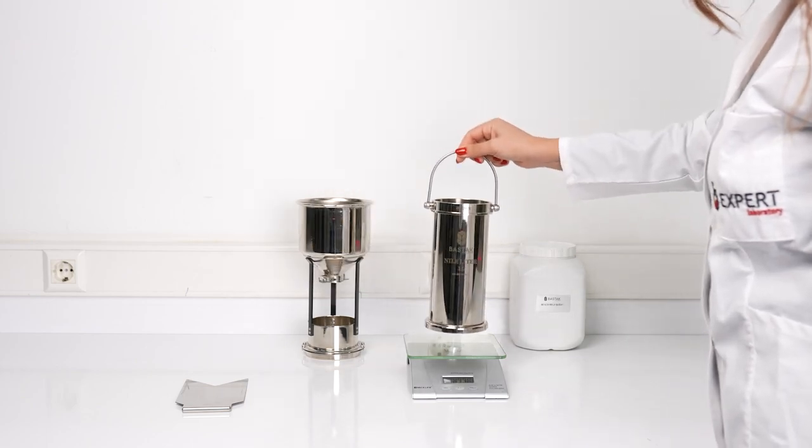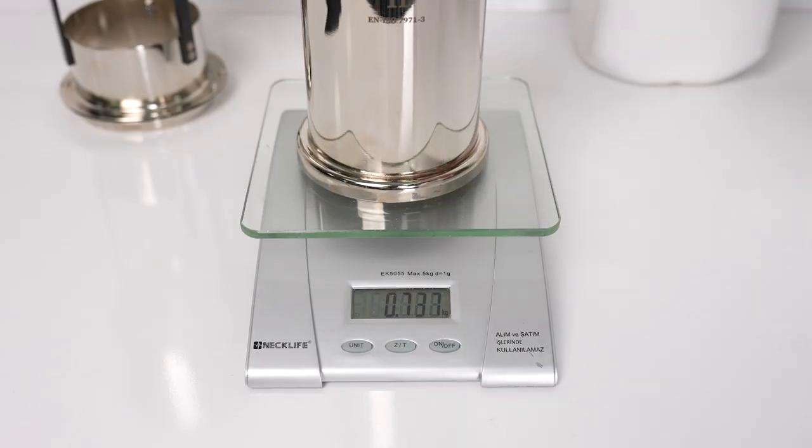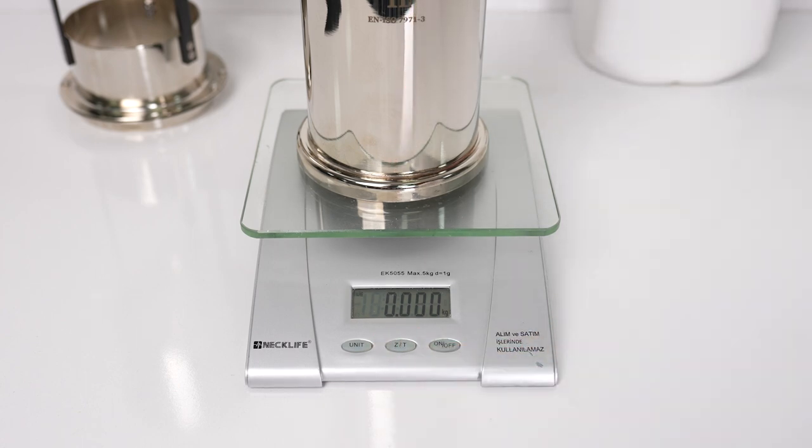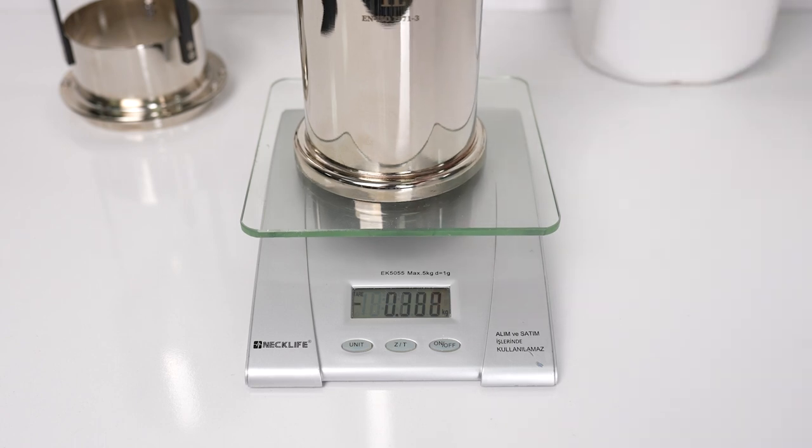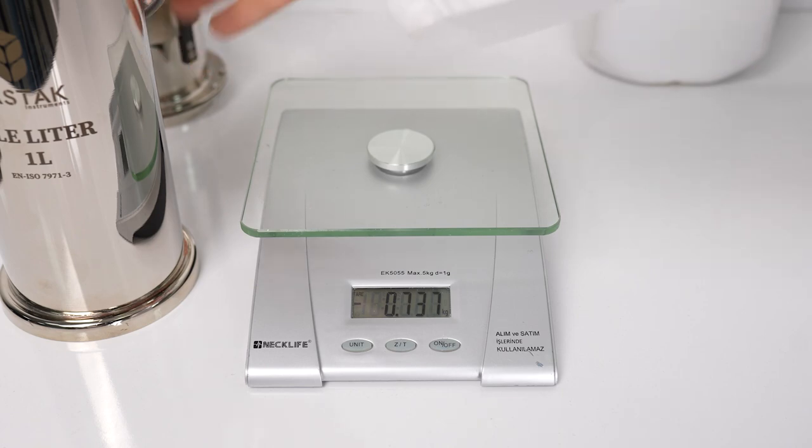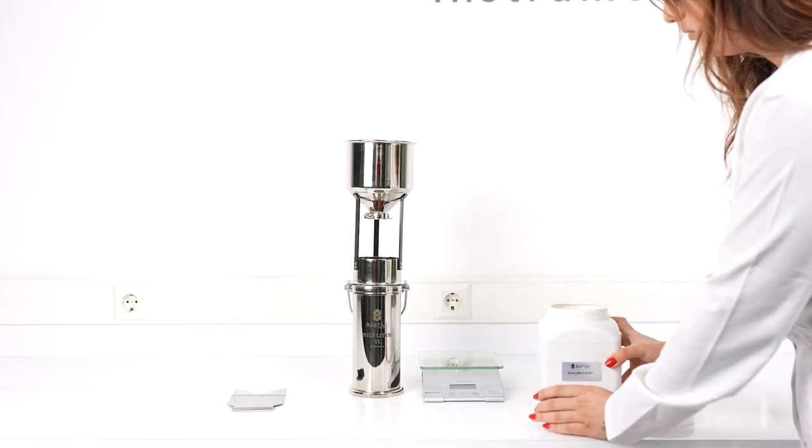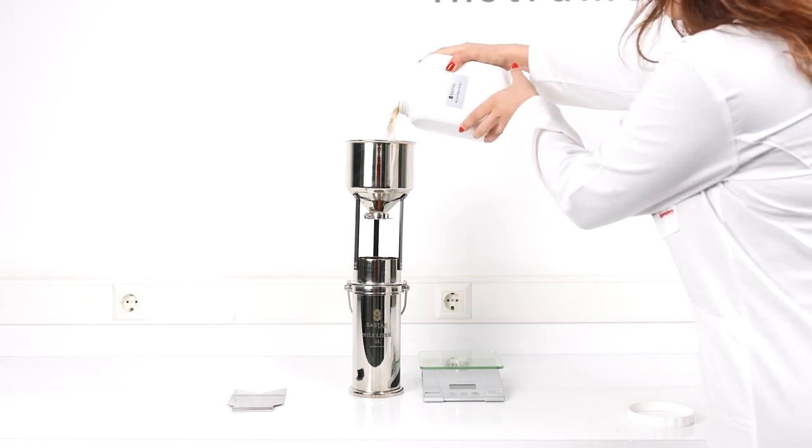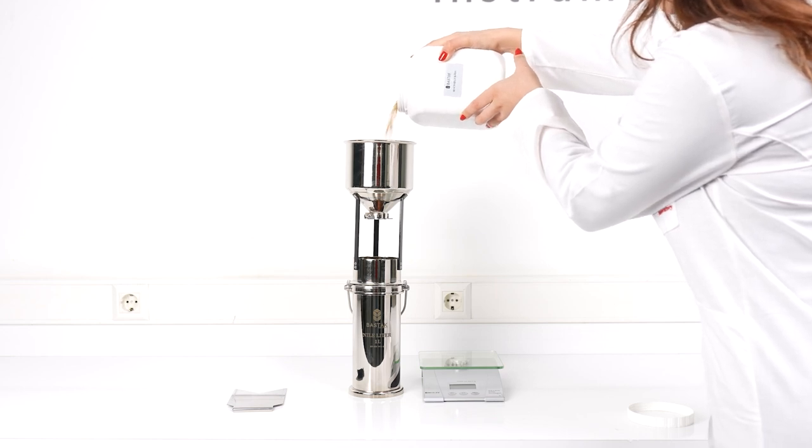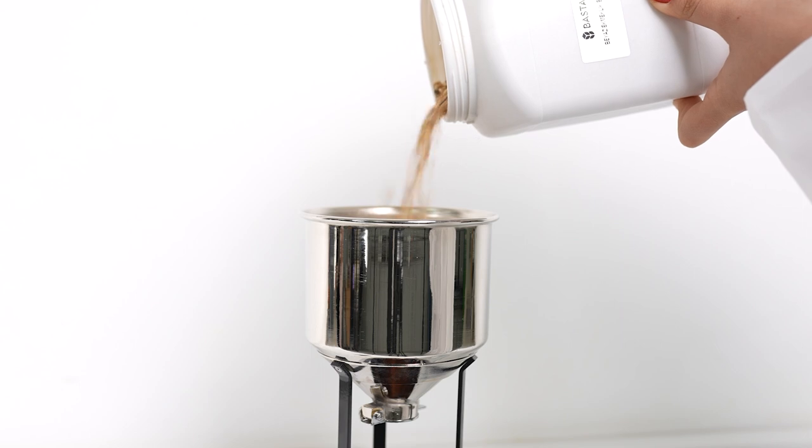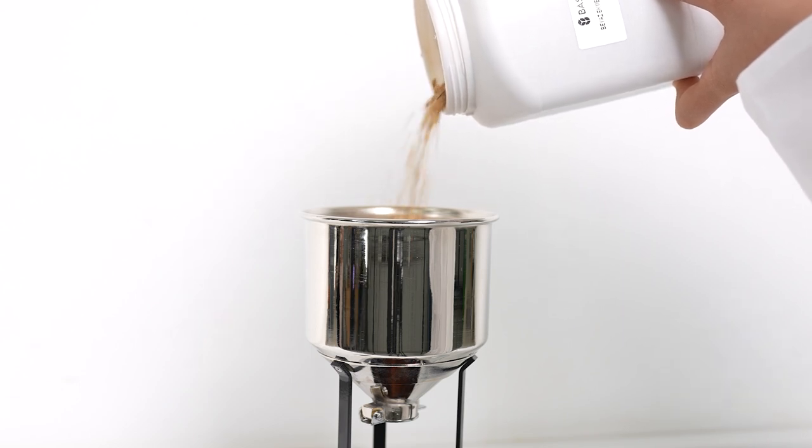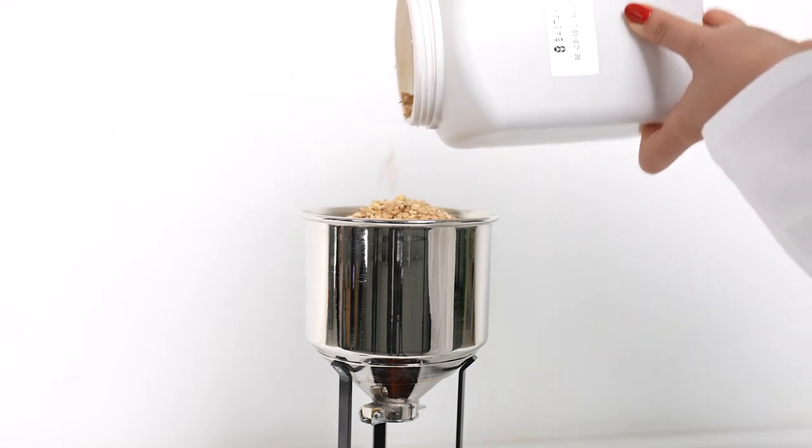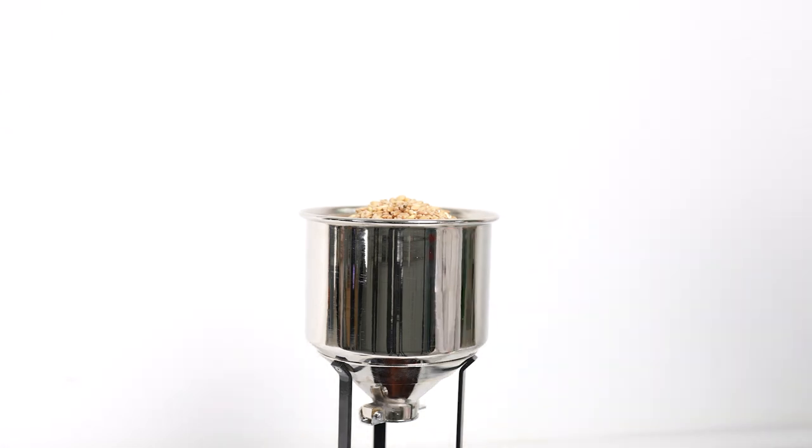Before starting the analysis, the empty measurement container's tare weight is measured using a digital scale with 1 gram precision and noted. Then the filling container is placed evenly on top of the measurement container. The homogenized sample to be analyzed is poured into the filling container.